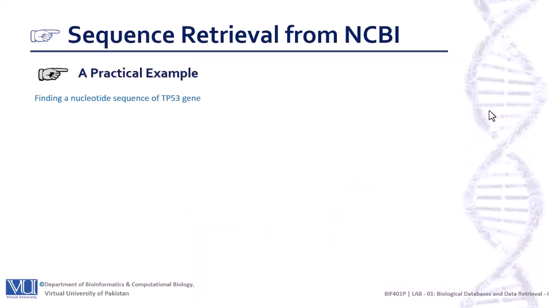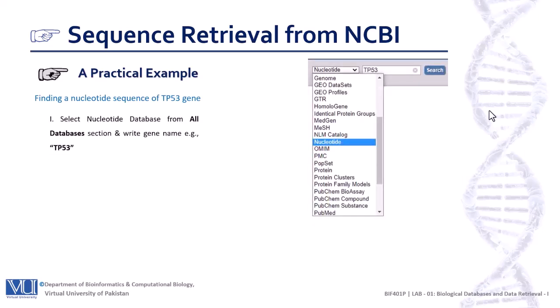Now the main topic: how to retrieve a nucleotide or protein sequence from the NCBI database. In this tutorial, we will find the nucleotide sequence of the TP53 gene and will also download this sequence. From the drop-down menu, select nucleotide, as we are retrieving a nucleotide sequence in this session. Enter the name of the organism or any gene you want to find — for example, to retrieve the sequence of the human TP53 gene, just write TP53 in the search box and click the search button. It will take a few seconds to find the information.